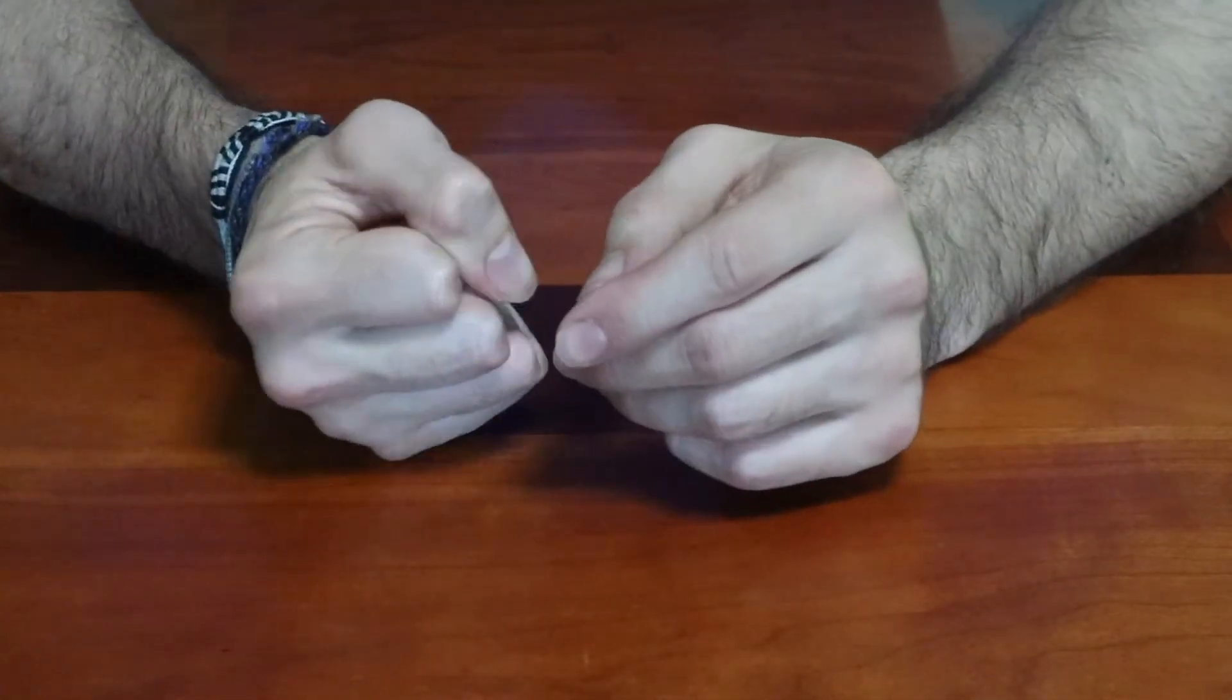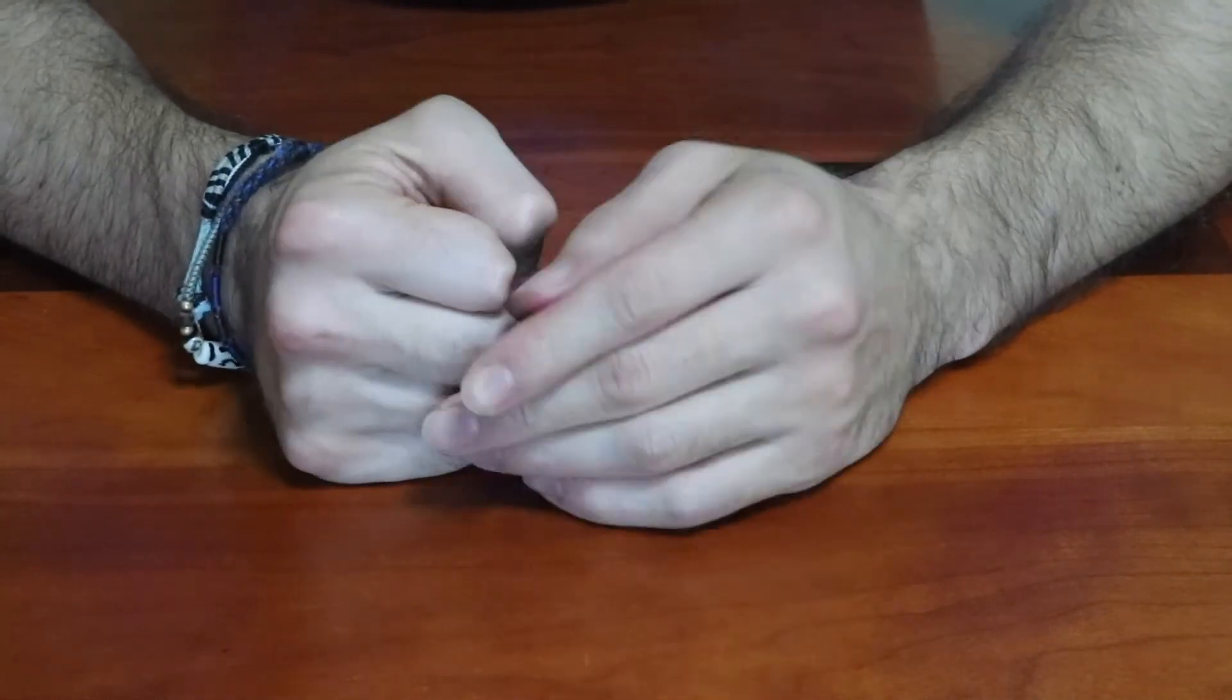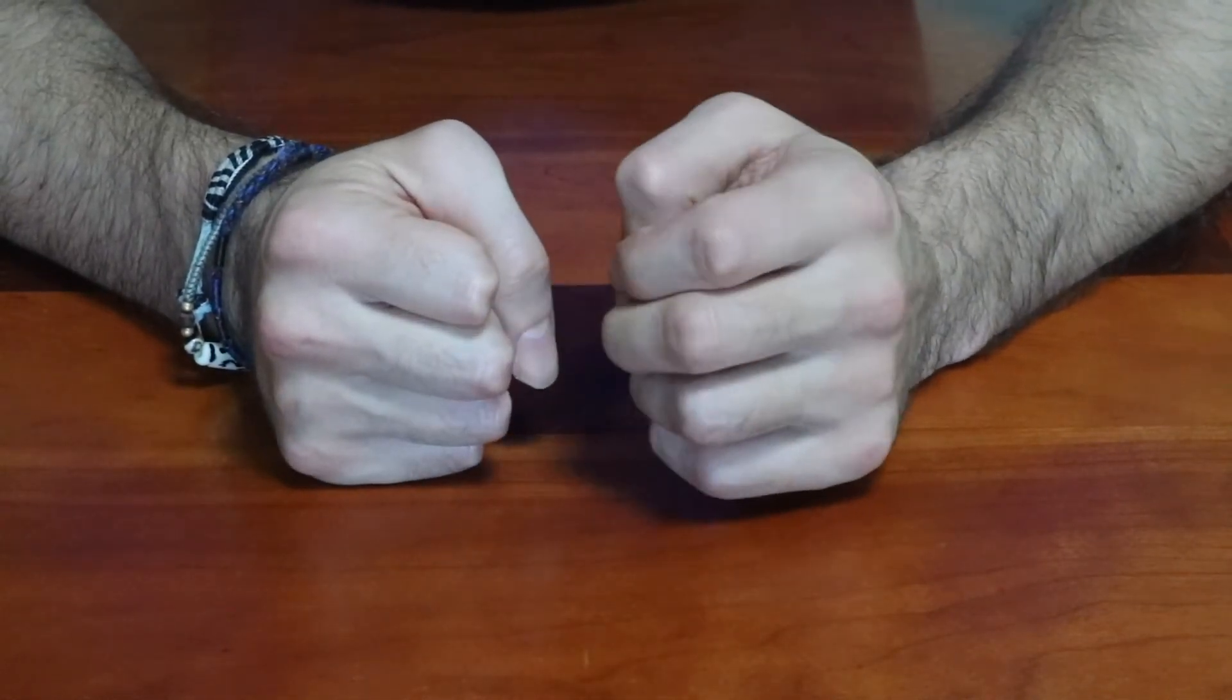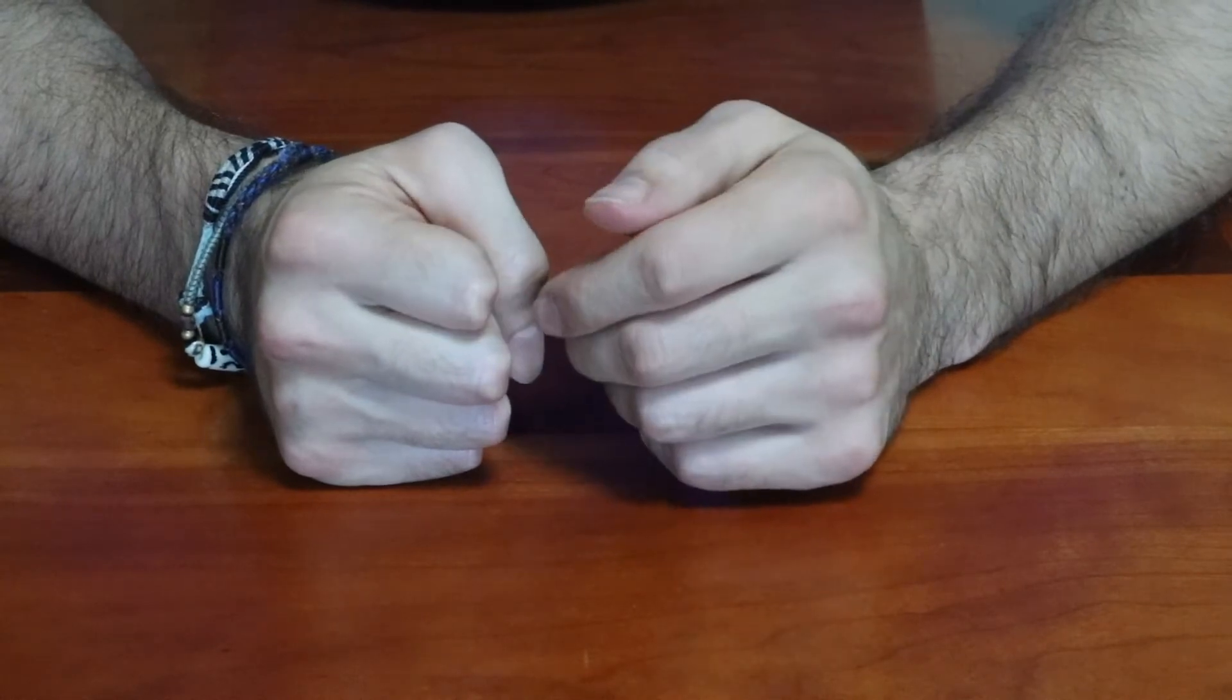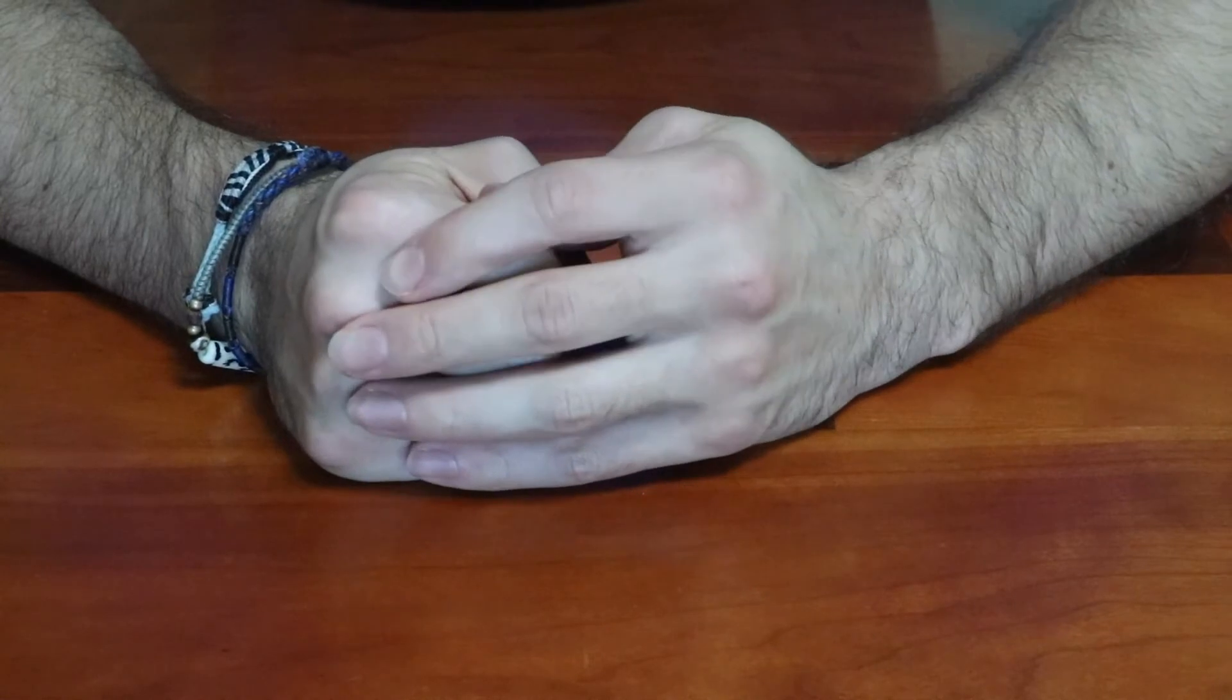You're going to want to do that on both hands. I focused primarily on one hand, but a very simple video. That's pretty much how you get started for doing soft tissue work, using your hands to do some self-massage and self-myofascial trigger point release.